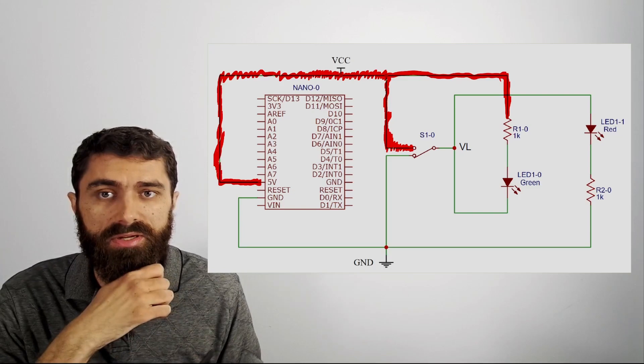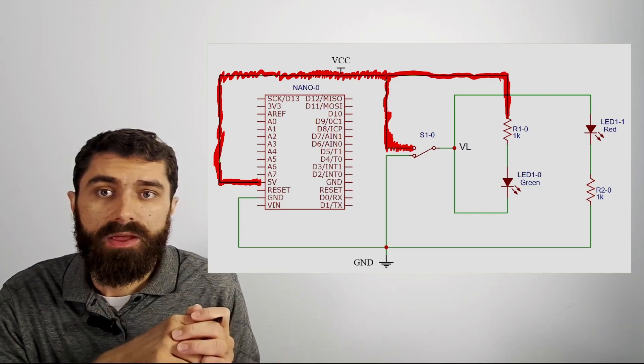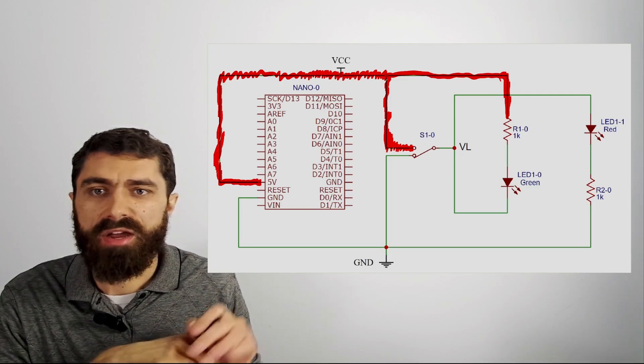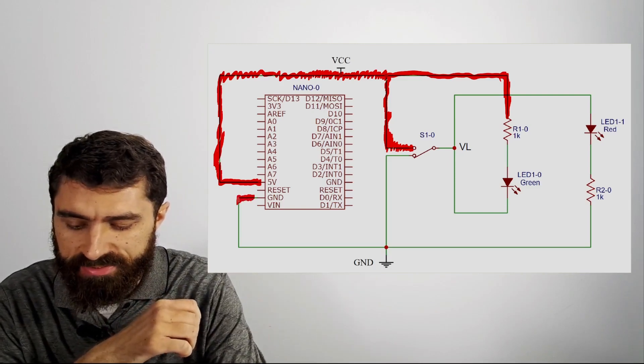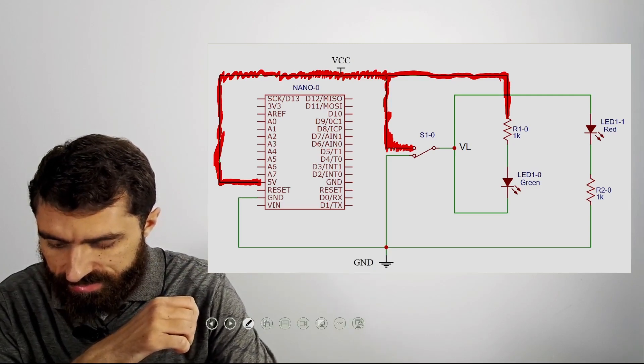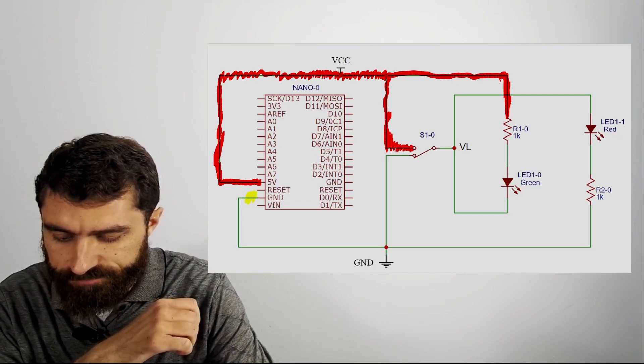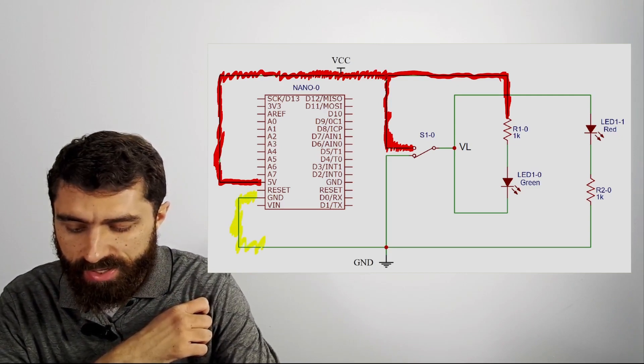Then what you do is you can go ahead and label that as node one. Then what you do is you pick another wire, start picking another wire, and it would probably help to select a different color. So I'll go ahead and select yellow here. And I'll just pick this wire and then you keep on highlighting.